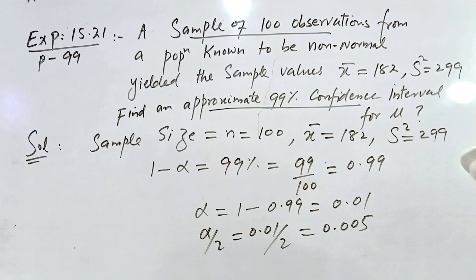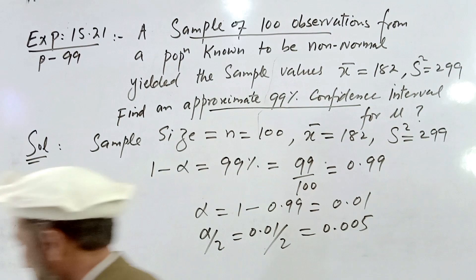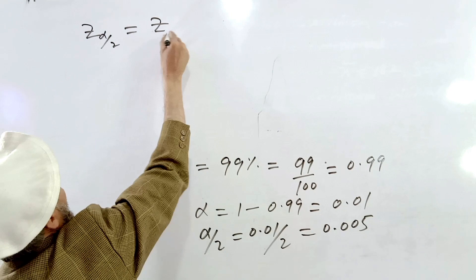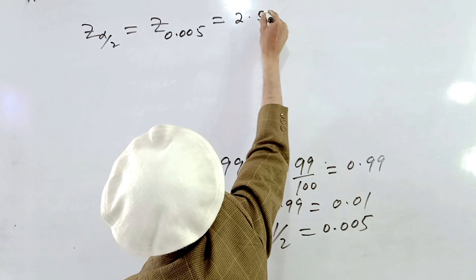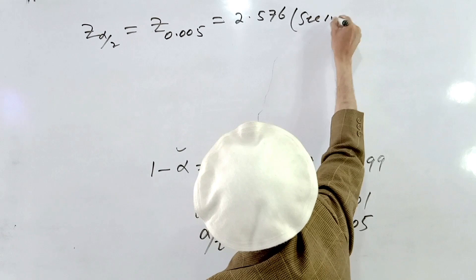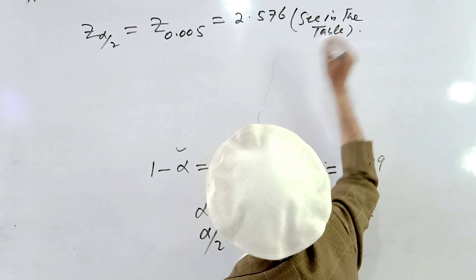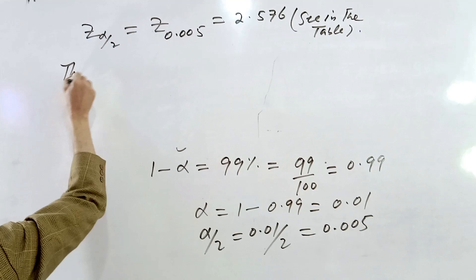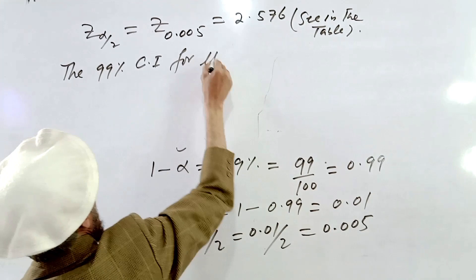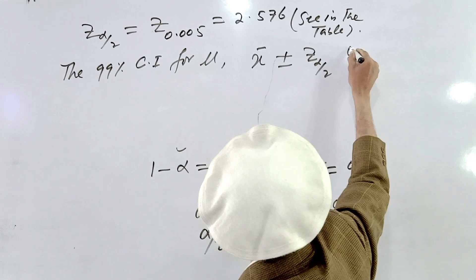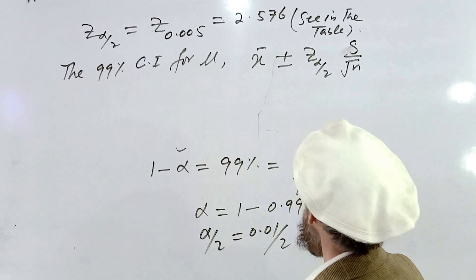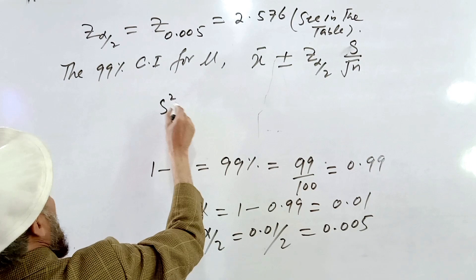We check the value of Z sub alpha over 2 for alpha over 2 equal to 0.005 in the table. Z sub alpha over 2 is equal to 2.576. The 99% confidence interval for the population mean is X-bar plus or minus Z sub alpha over 2 times S divided by the square root of n.